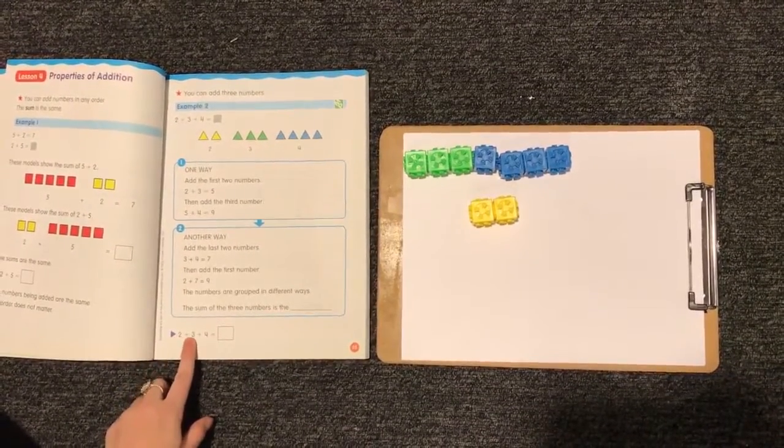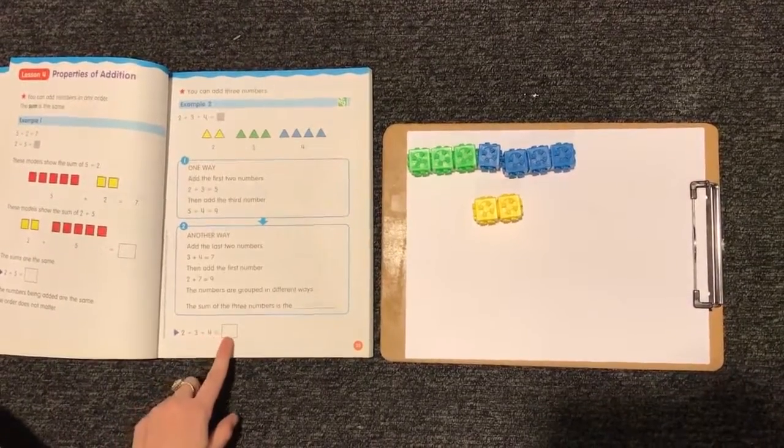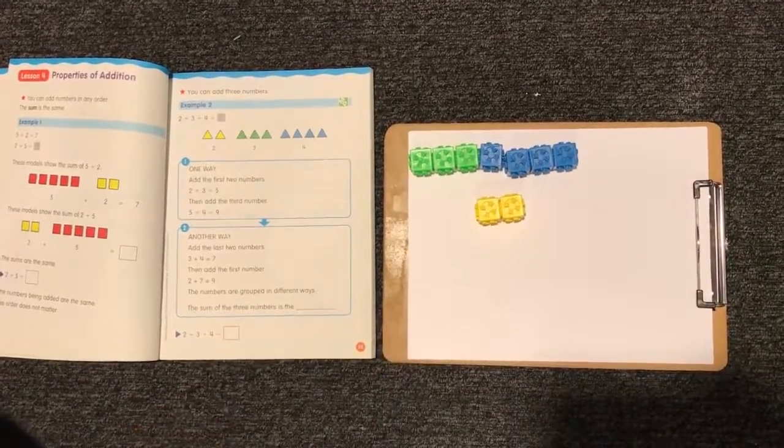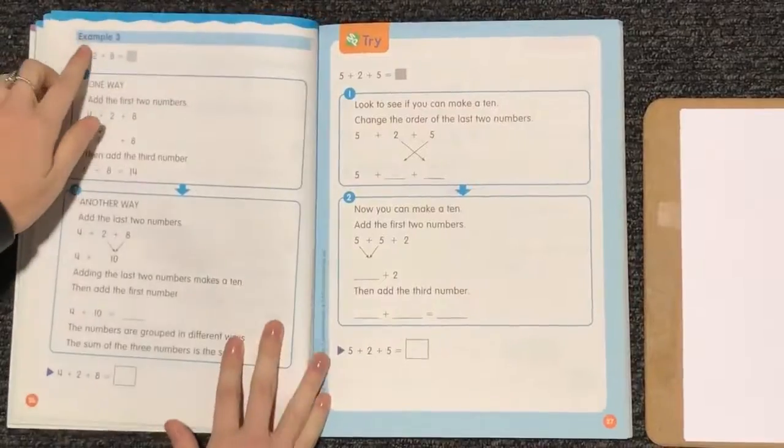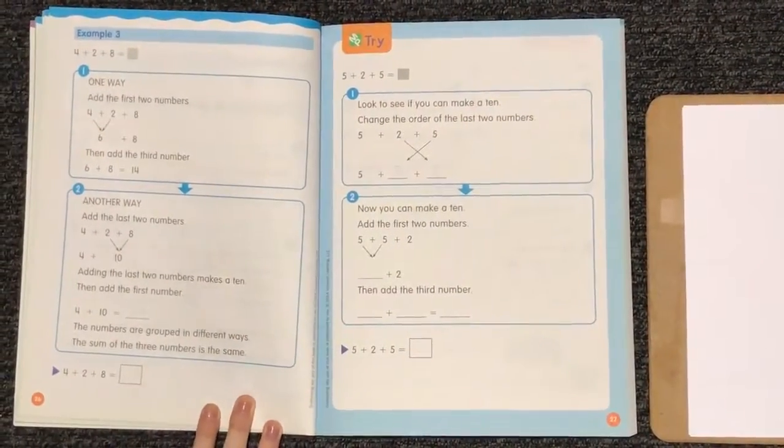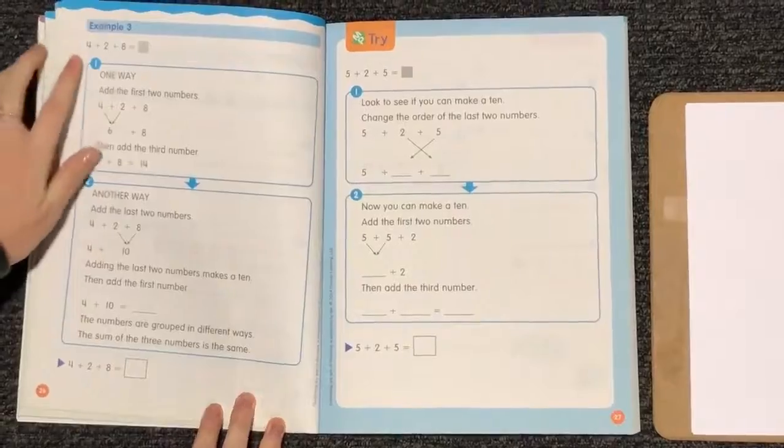The numbers are grouped in different ways but equal the same thing. The sum or answer of the 3 numbers is the same. So 2 plus 3 plus 4 equals 9. All right, boys and girls, for example 3, we're not going to be using counters. We're going to look at our numbers and bring them together.